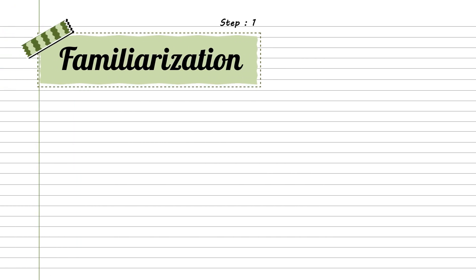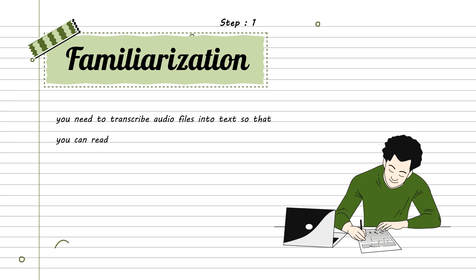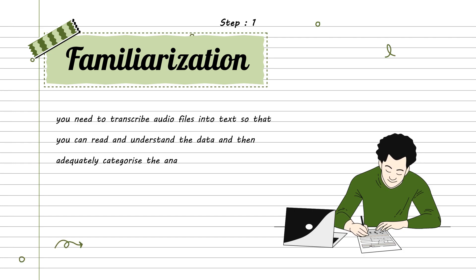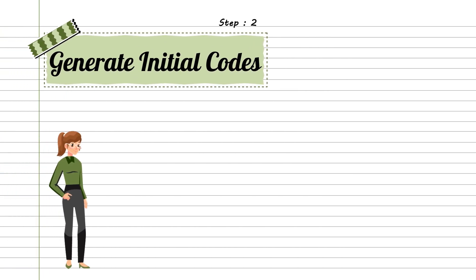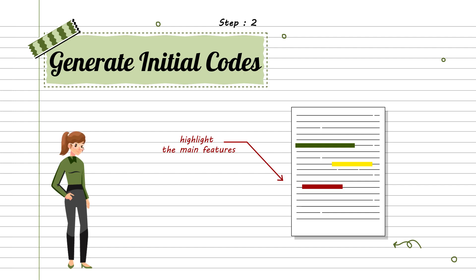In this step, you need to transcribe audio files into text so that you can read and understand the data and then adequately categorize the analyzed data appropriately. After that, code the data. It can be done through software or manually. To bifurcate the data, you can highlight the main features with different colors. Similarly, label all of the features and make appropriate notes.